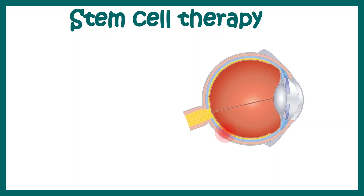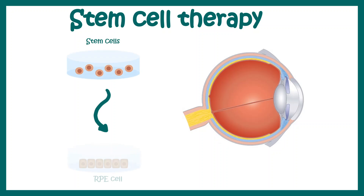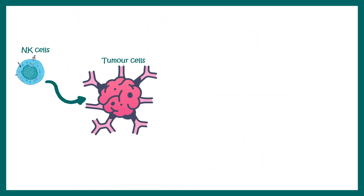A similar strategy can be used for eye treatment. For example, if there is inflammation or death in retinal cells, one can take stem cells from the same patient, convert them into retinal cells using specific morphogens provided in the cell culture, and ultimately replace the damaged and decaying retinal cells — potentially restoring vision to the patient.